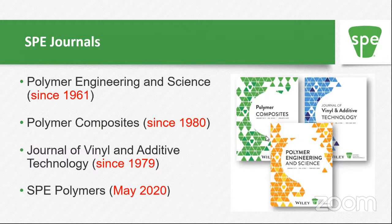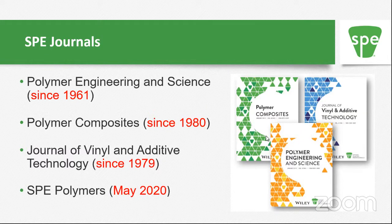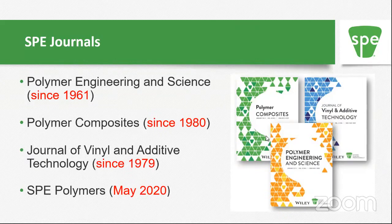I will be taking questions at the end if anyone has any questions. Here is a list of the SPE journals: Polymer Engineering and Science, which is the first journal started by the organization about 20 years after we were founded — it started in 1961. Polymer Composites started in 1980, Journal of Vinyl and Additive Technology in 1979, and we are starting a new journal, SPE Polymers, in May 2020.